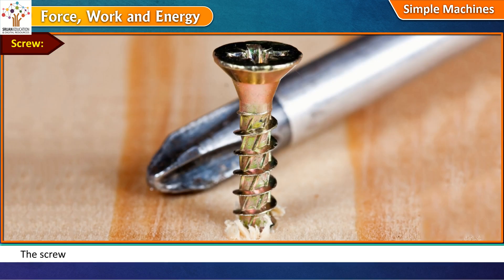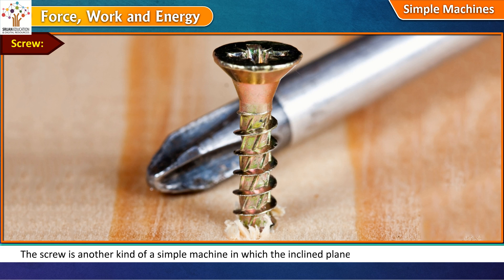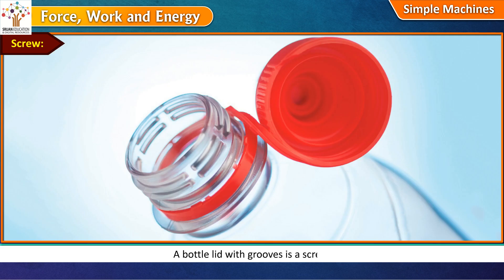Screw. The screw is another kind of a simple machine in which the inclined plane is wrapped around a cylinder with a sharp pointed end. A bottle lid with grooves is a screw.